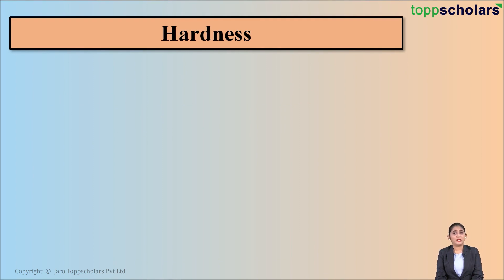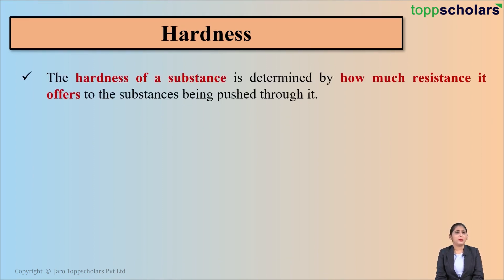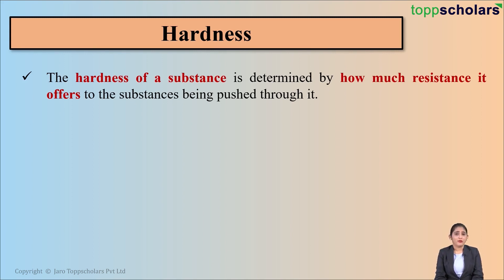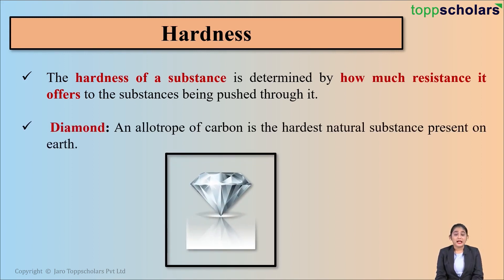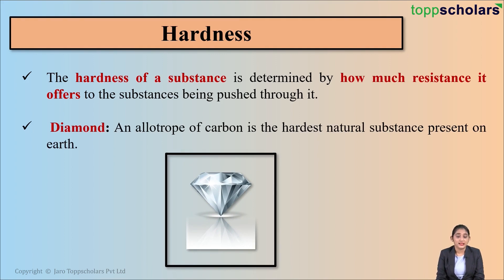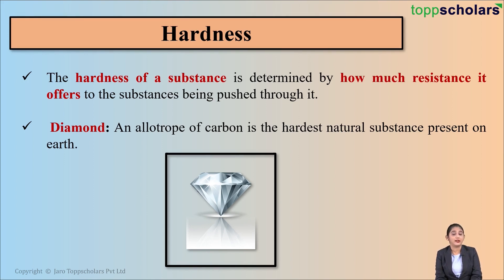The next property is hardness. What do we mean by hardness? Hardness of a substance is simply determined by how much resistance it offers to substances being pushed through it. For example, diamond — the hardest natural substance on earth. Diamond is an allotrope of carbon. Since diamond is very hard, it is used for cutting glass as well as for drilling and grinding.